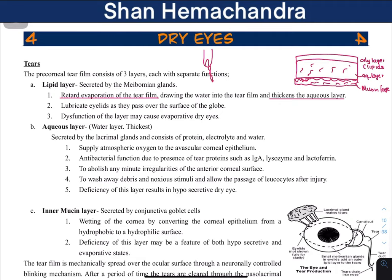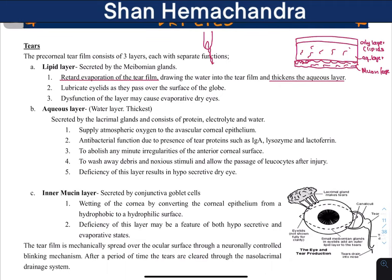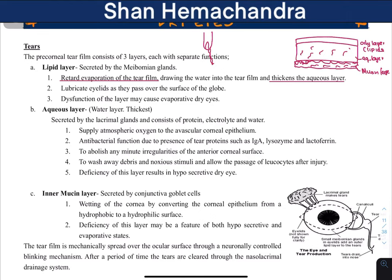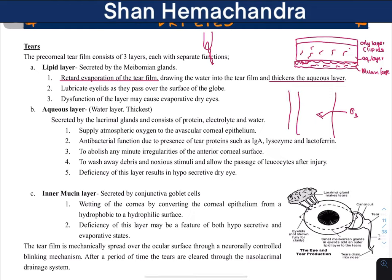Next, the aqueous layer — that is the water layer — and it is the thickest. When we say it's the water layer, it doesn't mean it is just water; it has several functions. It brings in oxygen because the cornea is avascular — there are no blood vessels — so the cornea depends on oxygen diffusing from the tear film or from the anterior chamber aqueous fluid.